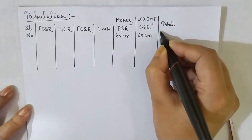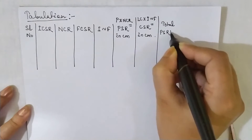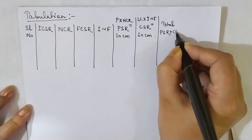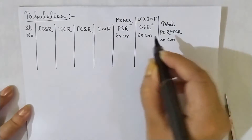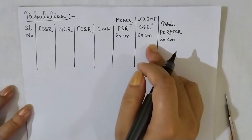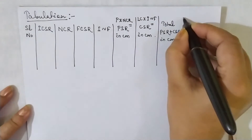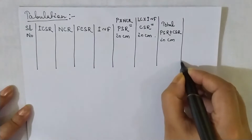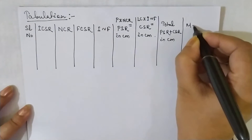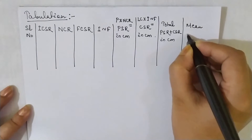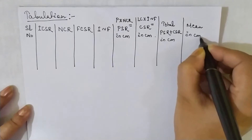Then comes the Total. The total is nothing but PSR plus CSR, also in centimeters — these two columns are added up to give the total. After that you calculate the Mean, in centimeters. This is my table under which we are going to take the measurements.